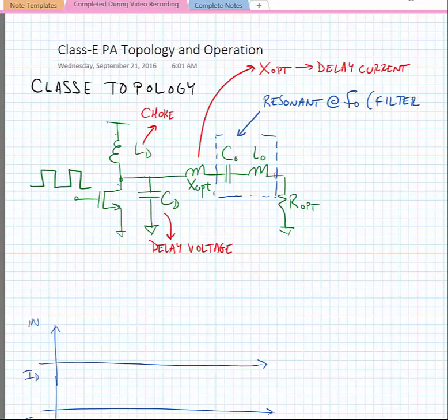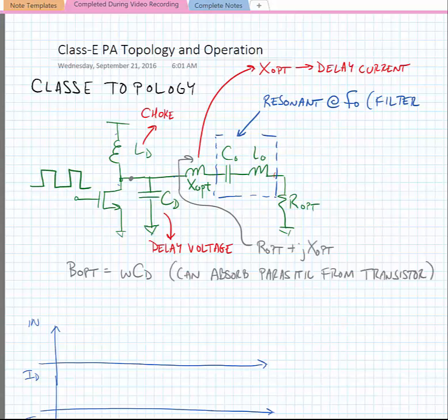So in principle, our operation relies on putting an optimum susceptance at the drain of the transistor. We'll call this BOPT. And it involves having some XOPT plus ROPT looking towards the output. Now it's important to note that the optimum susceptance can incorporate some of the parasitic from the transistor. And in some cases, we don't need to make the drain inductance a choke, and we'll talk about the specific case a little bit later.